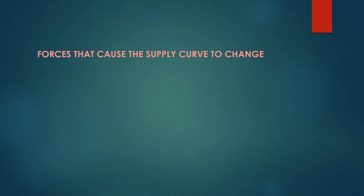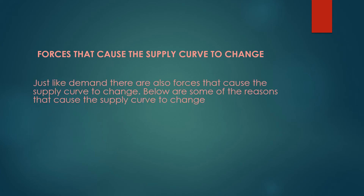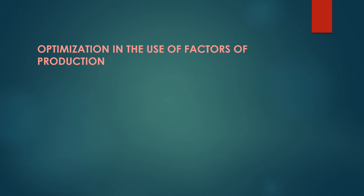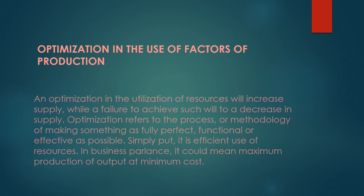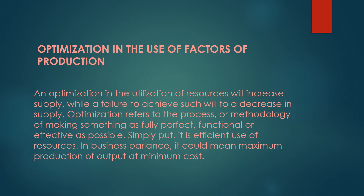We also have the forces that cause the supply curve to change. Just like demand, there are forces that cause the supply curve to shift. First: optimization in the use of factors of production. An optimization in the utilization of resources will increase supply, while a failure to achieve such will decrease supply. Optimization refers to the process of making something as fully perfect, functional, or effective as possible — simply put, efficient use of resources. In business, it could mean maximum production of output at minimum cost.